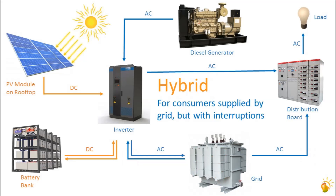This brings us to the third type of solar plant, known as the hybrid plant. Here, the solar plant can integrate with grid power, battery and diesel power. We recommend hybrid solar plants for energy consumers who have grid power but with frequent interruptions and who need critical loads to be powered continuously. Most industrial and commercial energy consumers in India fall under this category and will require this type of solar plant.